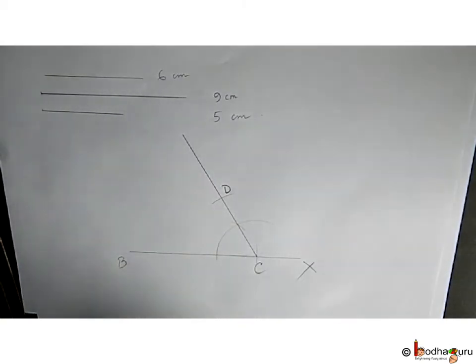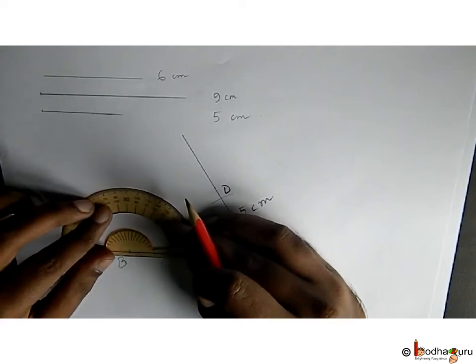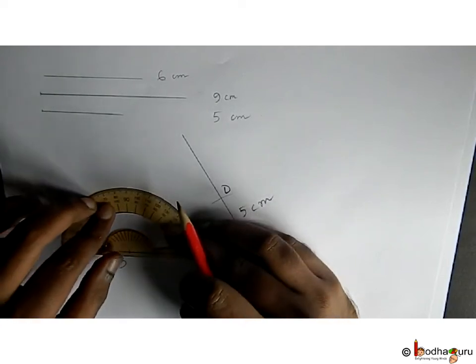Now we need to draw 70 degrees on B. We have to use a protractor for that. We draw 70 degrees at B using a protractor.